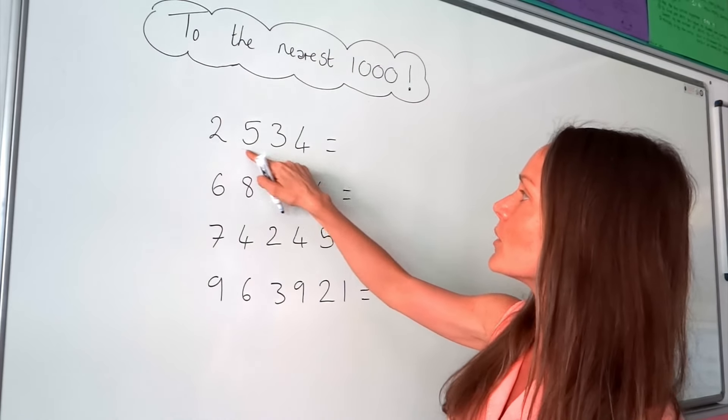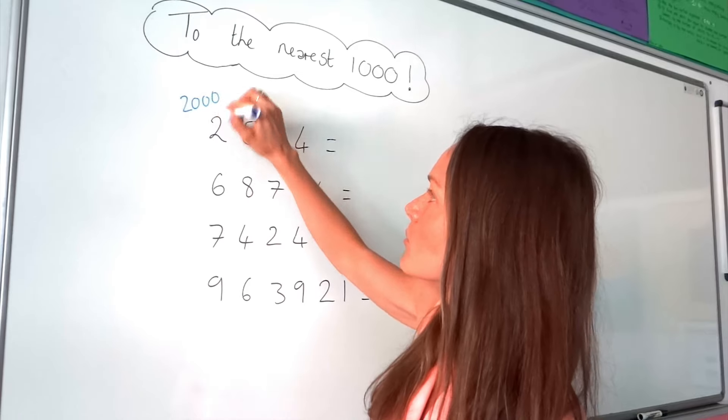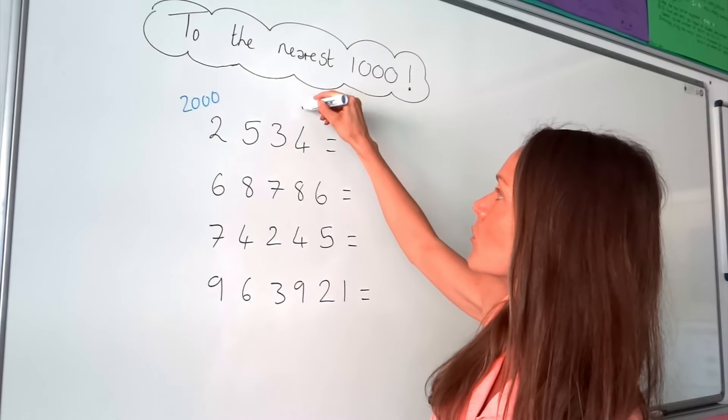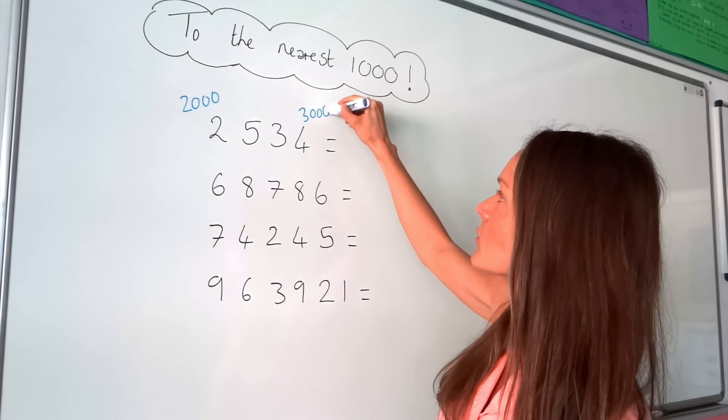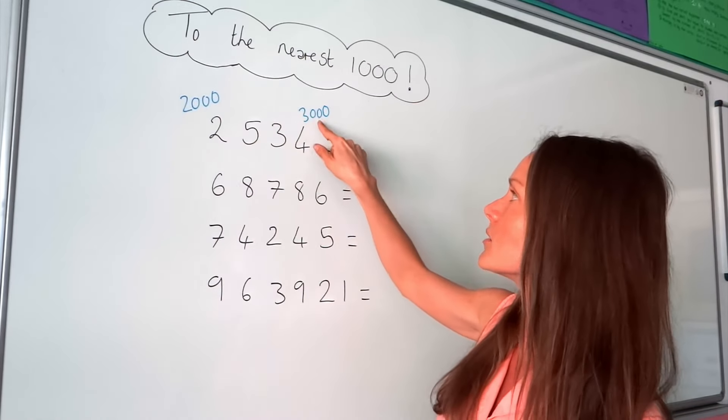So the first number, the one that's smaller than this one, would be 2,000. Okay, so that's a multiple of 1,000. And the bigger one would be 3,000. So this number falls in between 2,000 and 3,000.